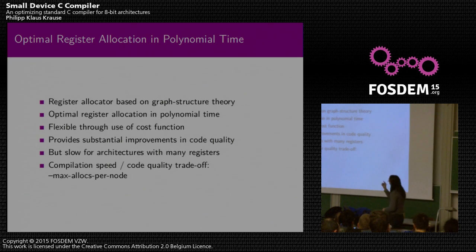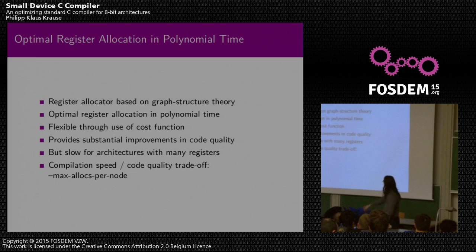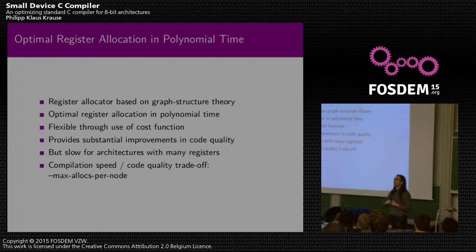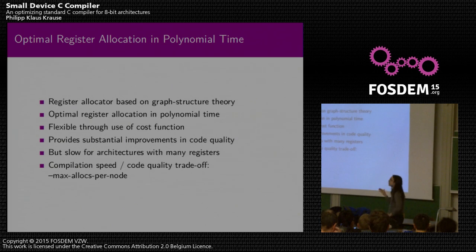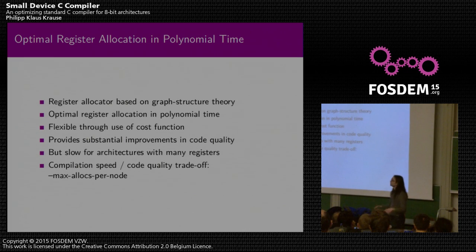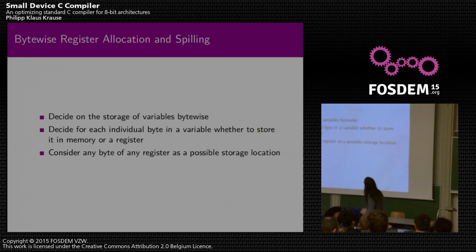The algorithm is slow for architectures with many registers, since the number of registers appears in the exponent of the runtime. Our 8-bit targets often have few registers so it's feasible. There's a theoretical hardness result showing we can't remove the register count from the exponent if we want optimality. Because compilation can still be slow, there's a compiler switch called max-alloc that controls the memory allowed for register allocation and other graph-structure-based optimizations, trading off compilation speed against code quality. Set it high for more optimization; set it low for faster compilation.